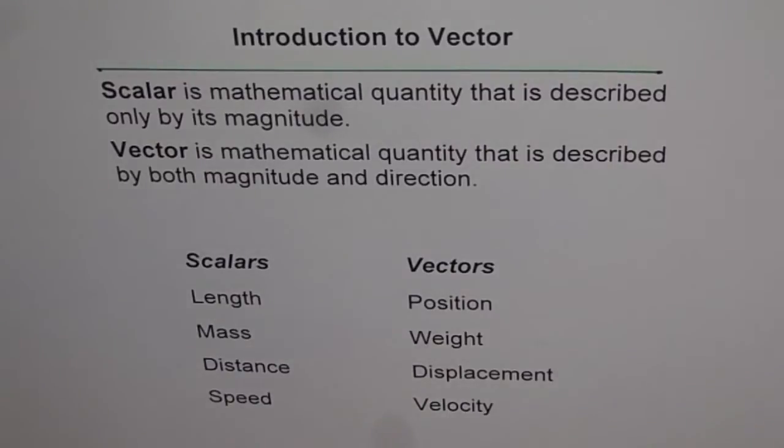So scalar is a quantity, we are saying mathematical quantity because we use this language mainly in mathematics. So scalar is a mathematical quantity that is described only by its magnitude. Whereas vector is mathematical quantity that is described by both magnitude and direction.